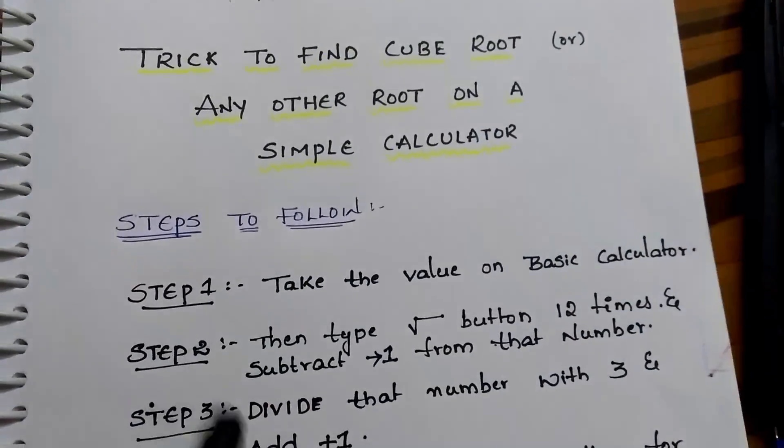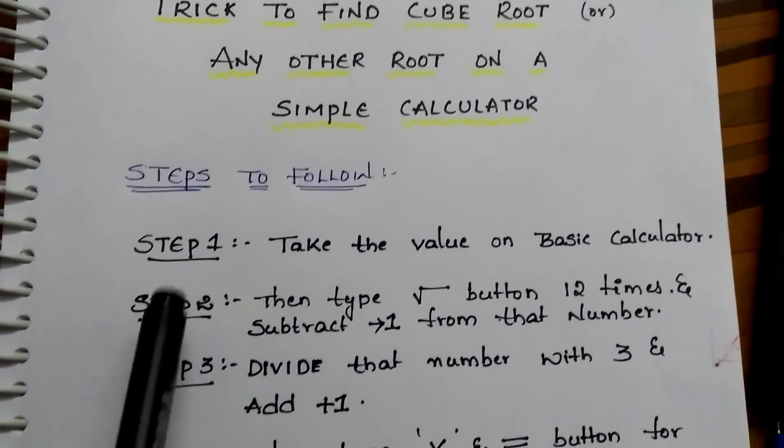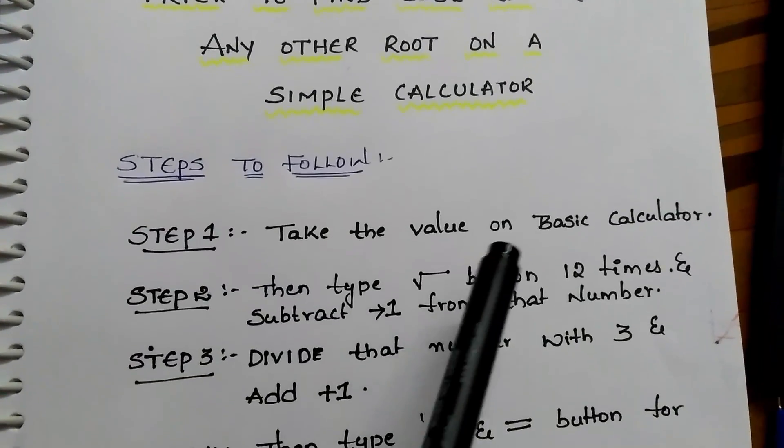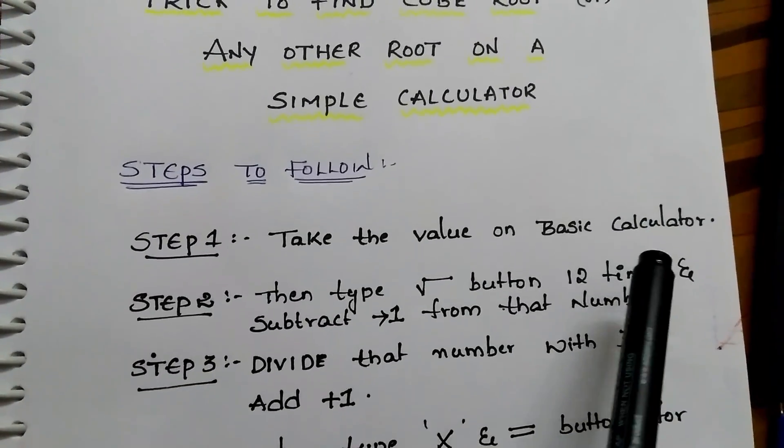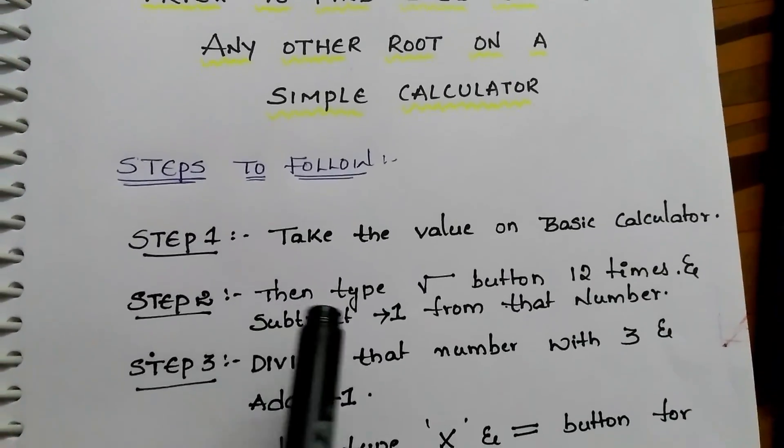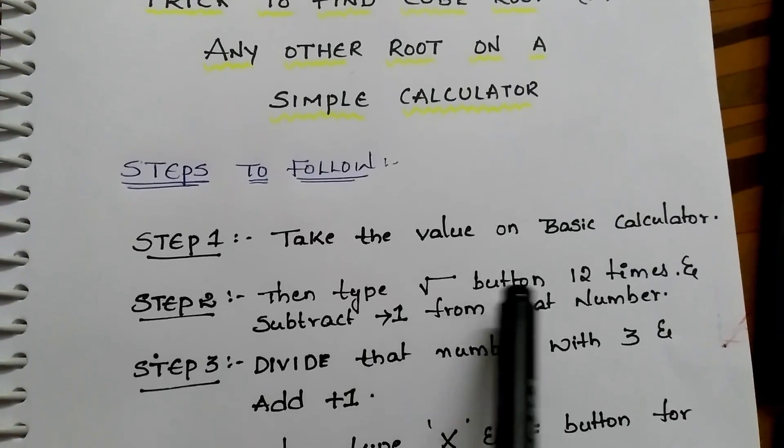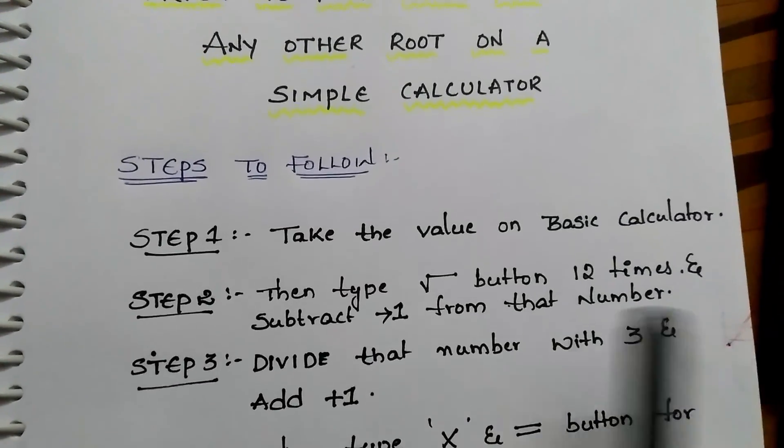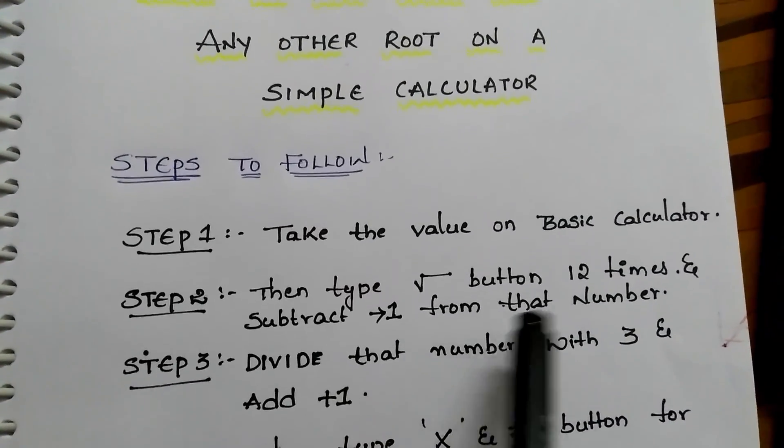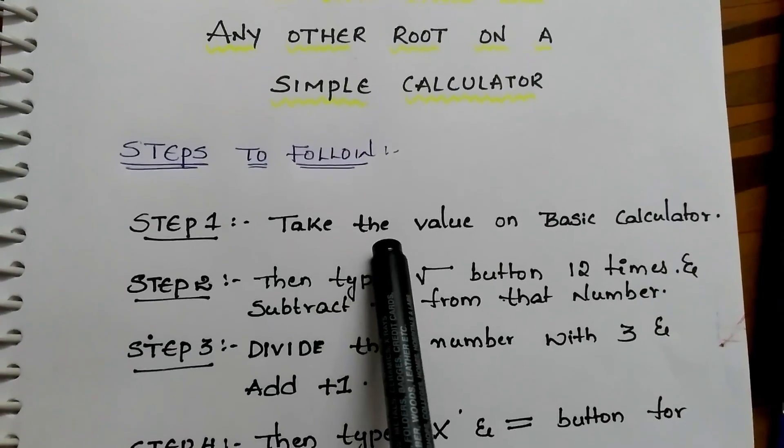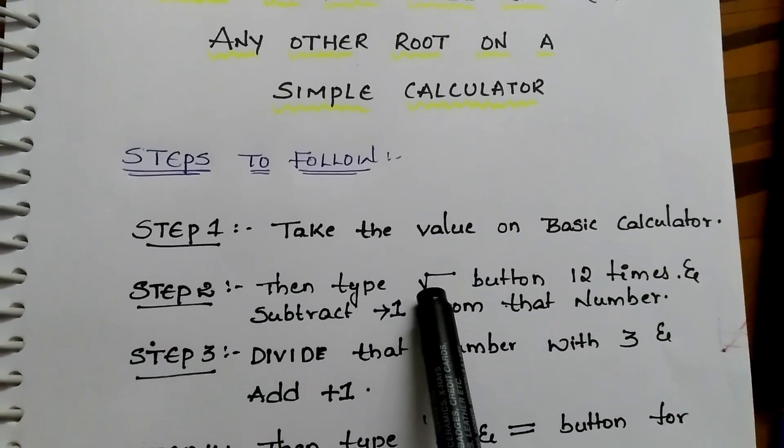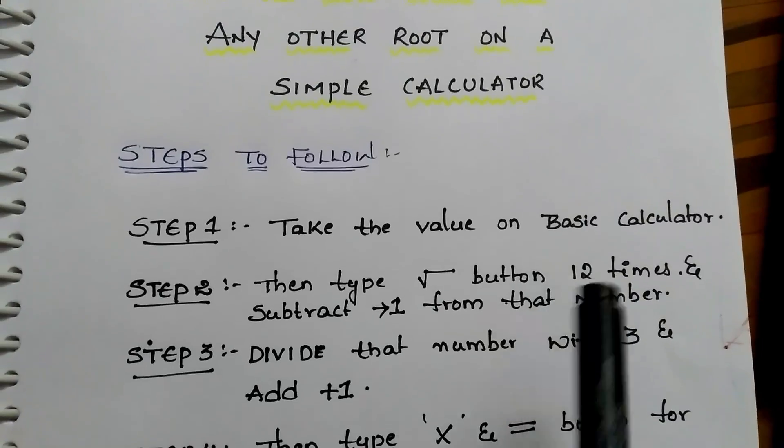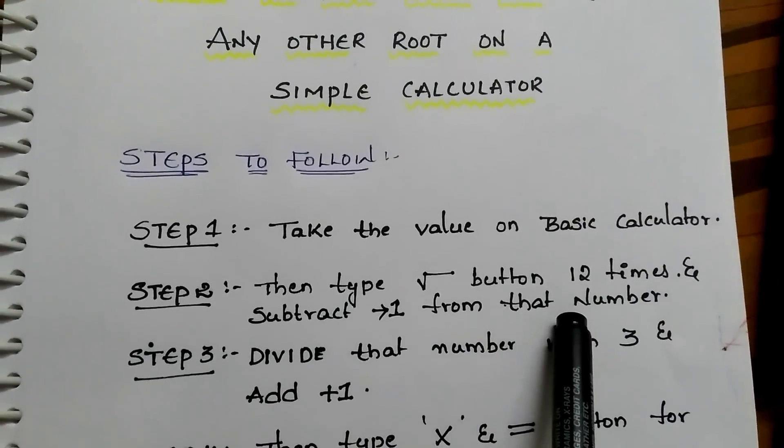These are the steps, let us discuss one by one. Step 1: Take the value you want to find on a simple calculator. Step 2: Then press square root button 12 times and subtract 1 from that number. First you have to take the number you want to find, then press square root button 12 times and minus 1 from that number.